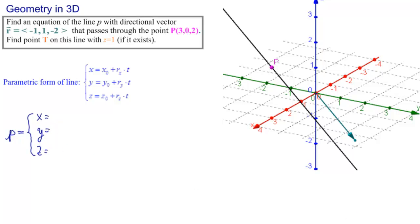And then let's pick up the points: 3, 0, 2. And then we would have minus 1 times t from here, plus 1 times t, and minus 2 times t.